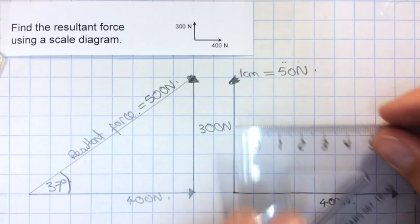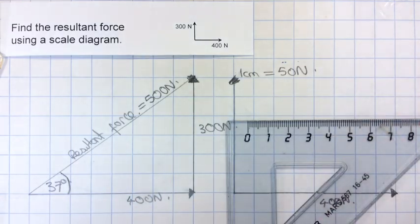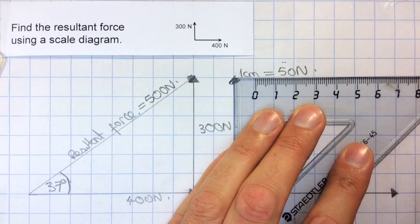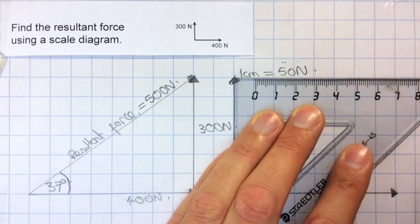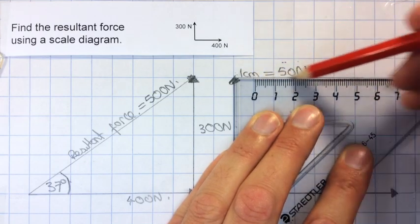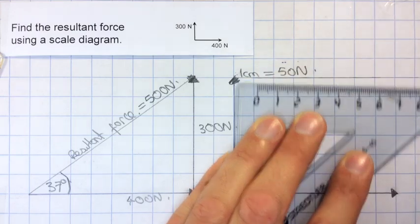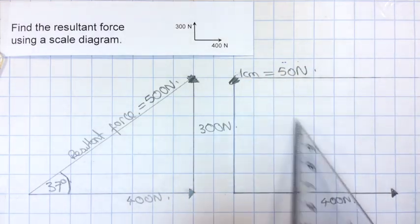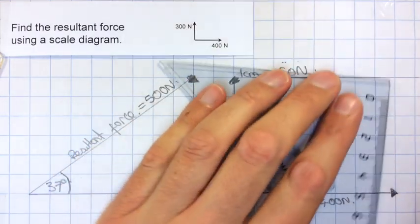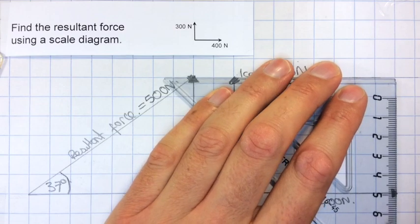And then I need to complete the parallelogram that these would be two sides of, which is actually a rectangle in this case. So this is where a set square is useful, and I can draw in that side. And then I can draw in the other side.